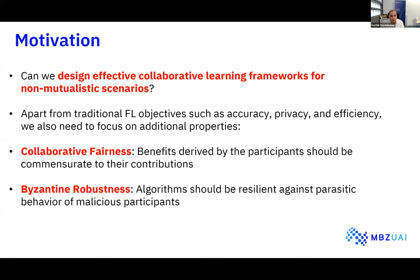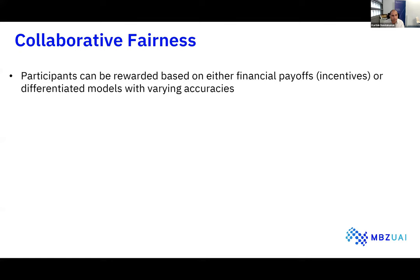Collaborative fairness and Byzantine robustness are very important properties if you want to extend collaborative learning to non-mutualistic scenarios. In this talk I'll mainly discuss a couple of works we did in these two areas, along with briefly touching upon a privacy-related work we did recently.